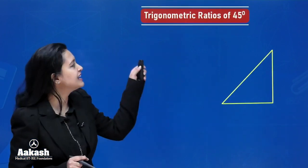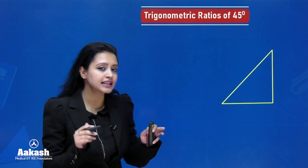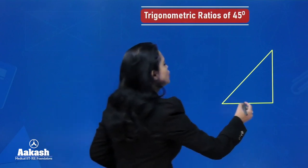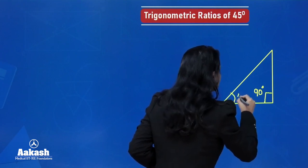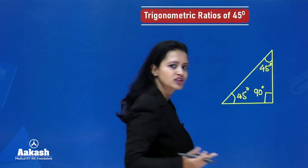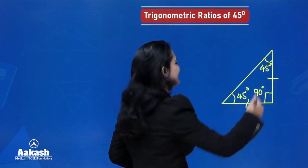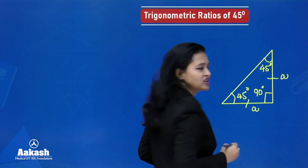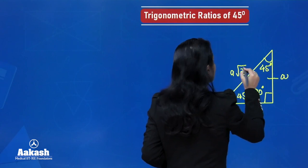Let's see the trigonometric ratios of specific angles, starting with 45 degrees. We take a right-angled triangle and set this angle as 45 degrees. If one angle is 45 degrees, then the other acute angle will also be 45 degrees — meaning both non-hypotenuse sides will be equal. This is an isosceles right-angled triangle. We suppose both equal sides measure A, and by using Pythagoras theorem, the hypotenuse measures A√2.